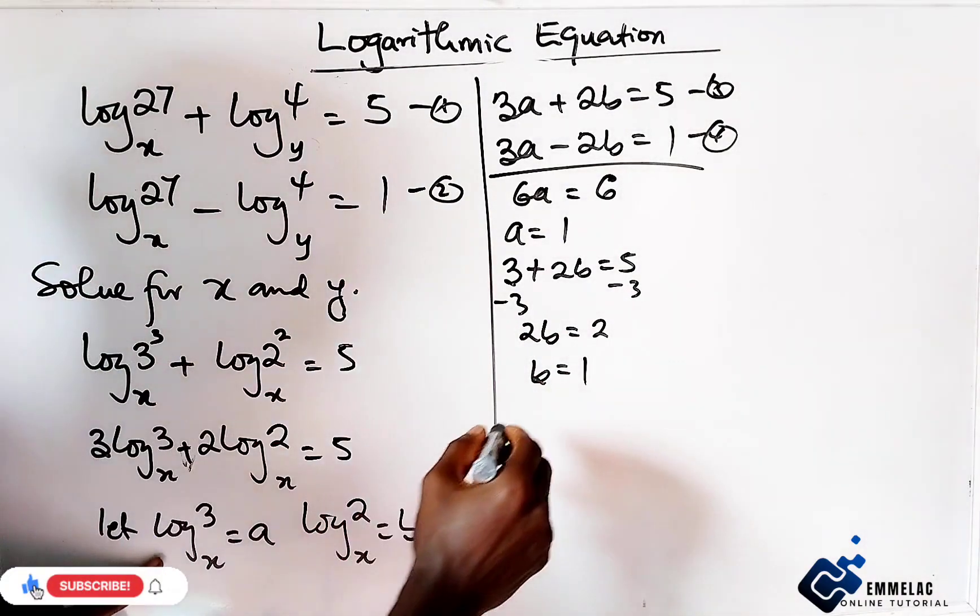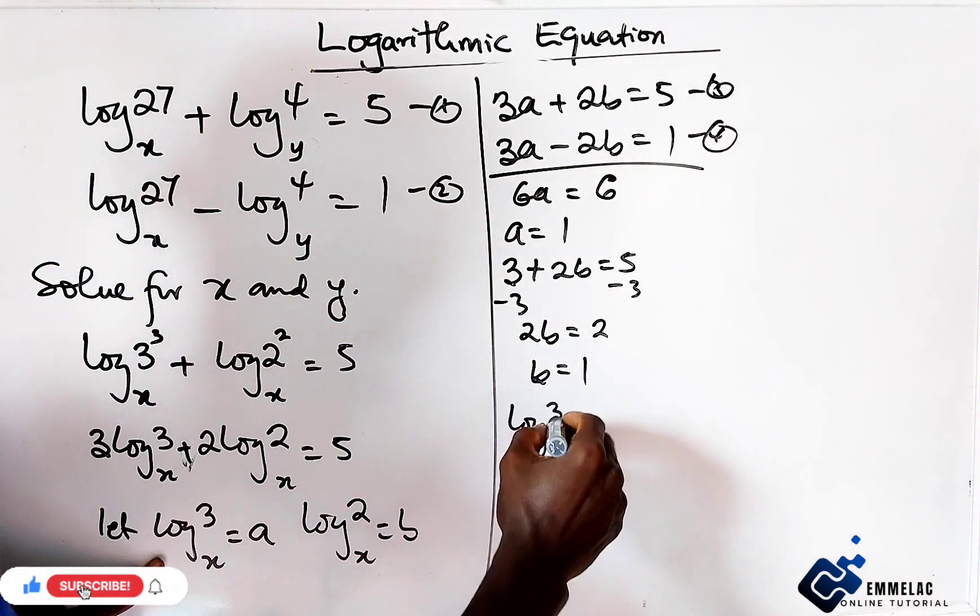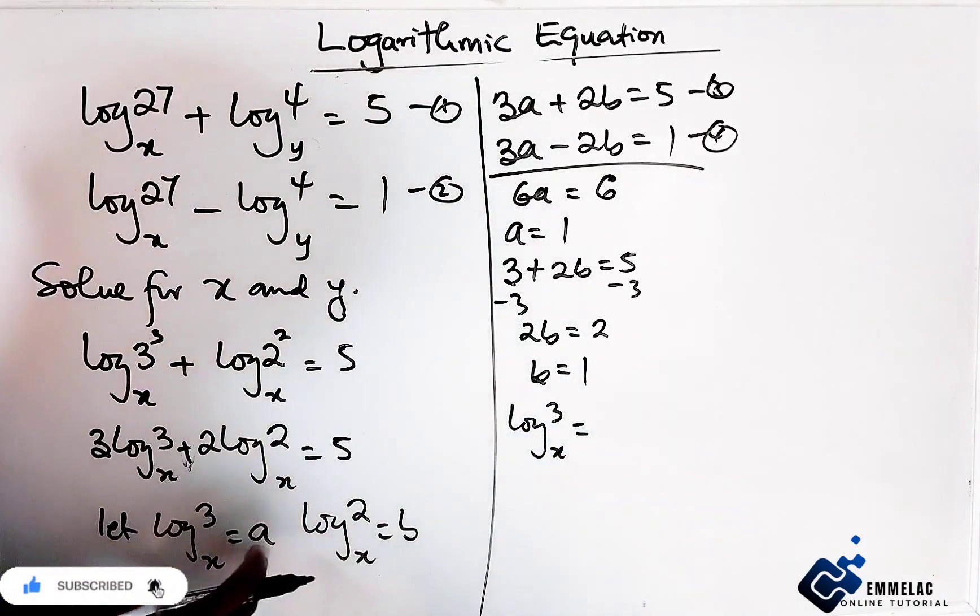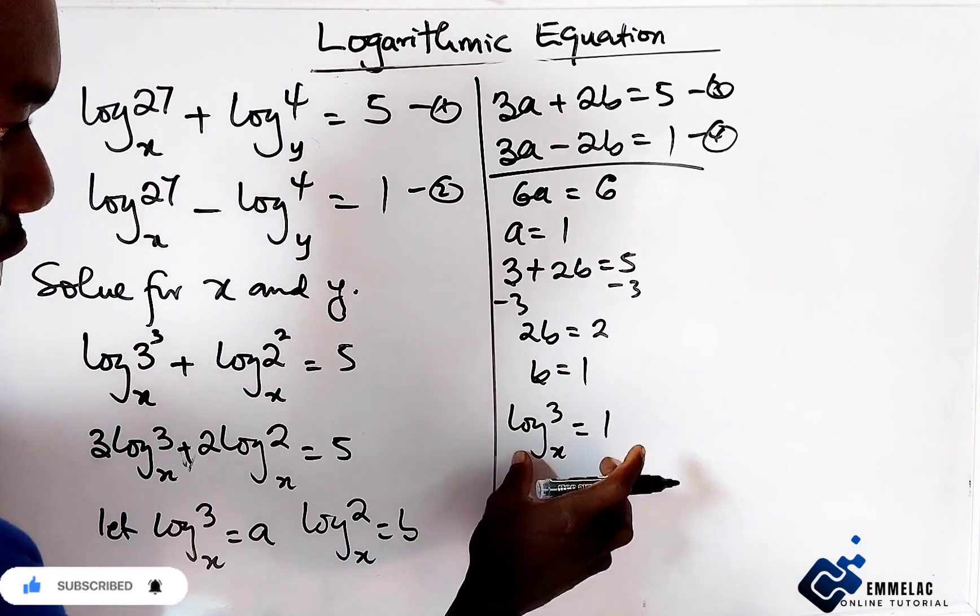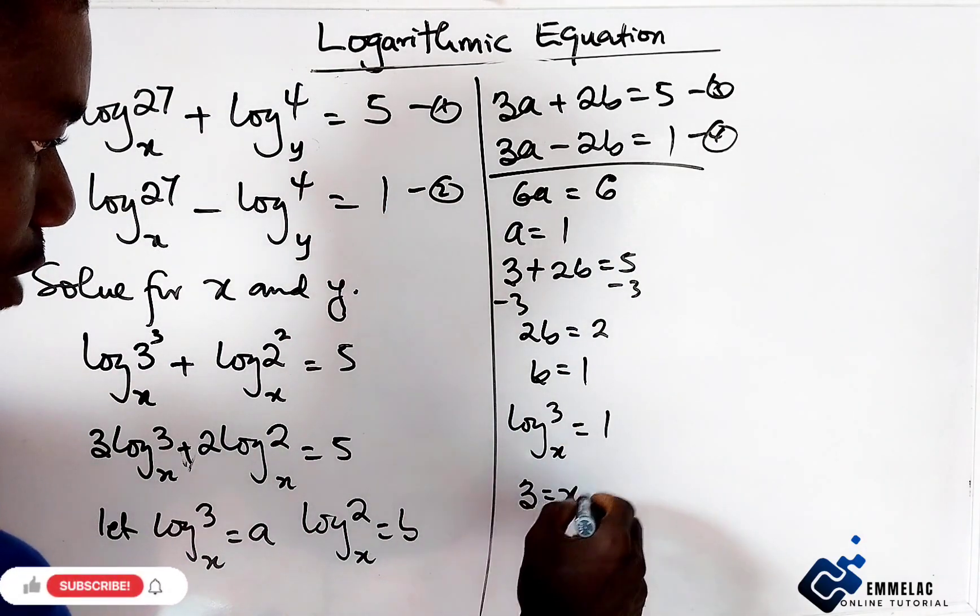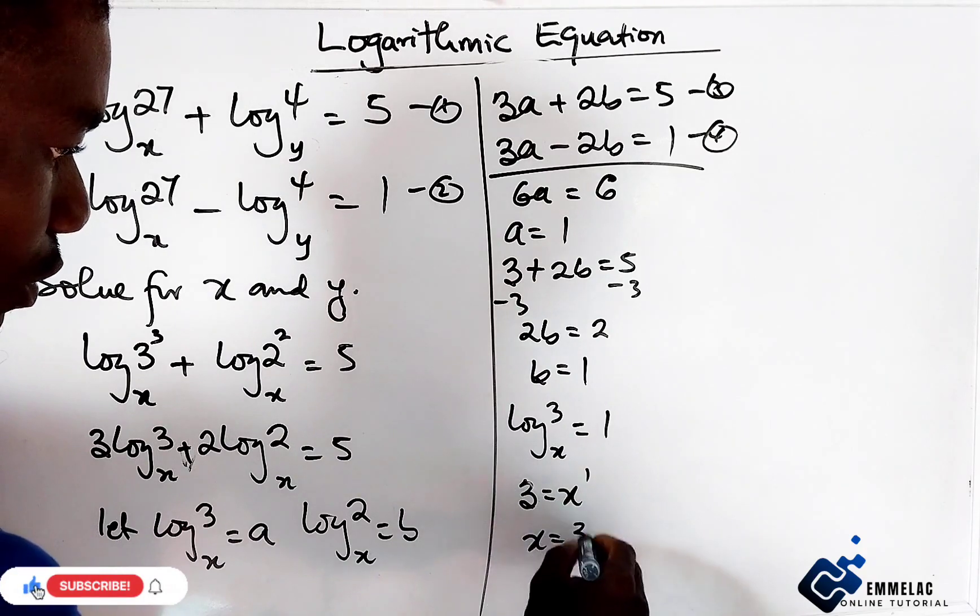From here, log base x of 3 equals a, which is 1. Changing this to index form, we have 3 equals x raised to the power 1, so x equals 3.